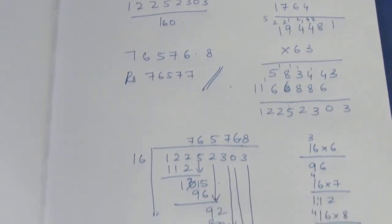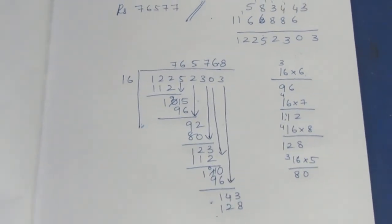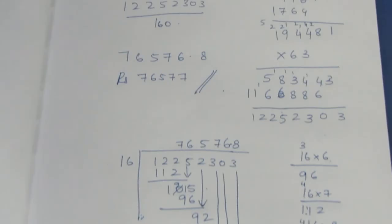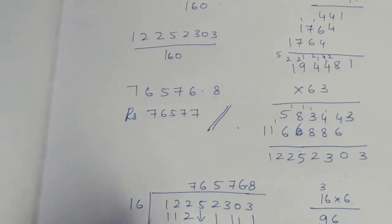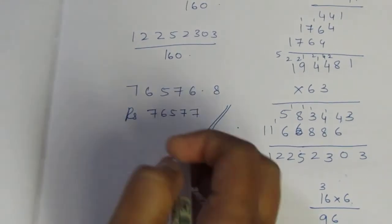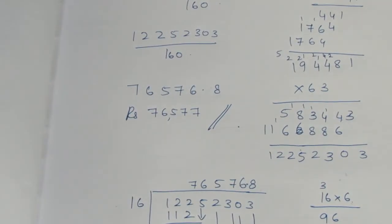Rs. 76,577 — this is the salary after five years. If you check all the rough columns, multiply, divide, and count. After five years, the salary is Rs. 76,577. You can write this in word form. That is the sum. Thank you.